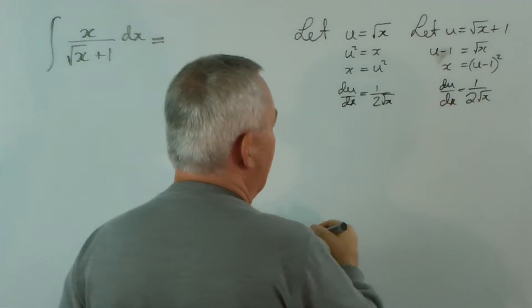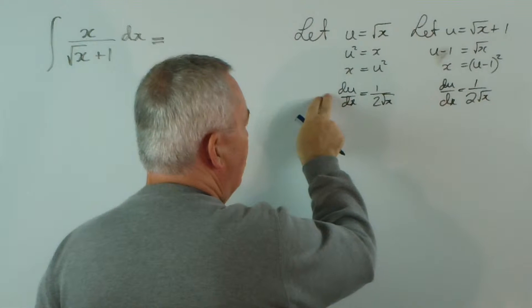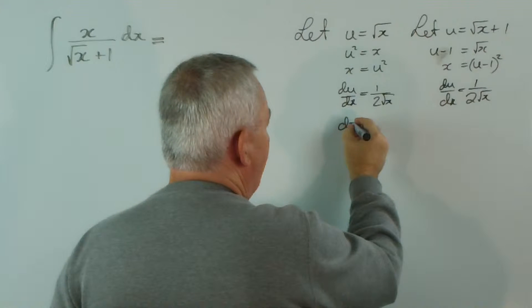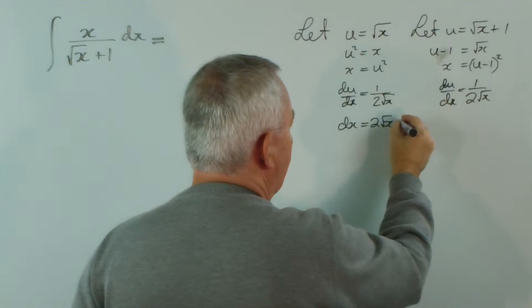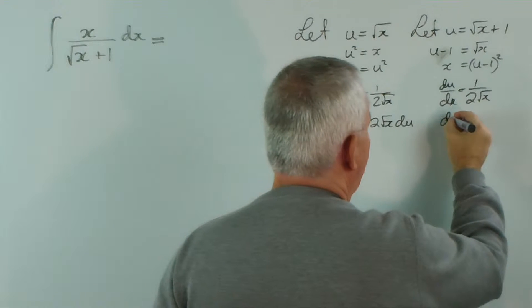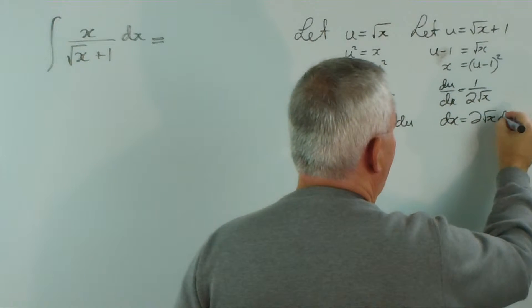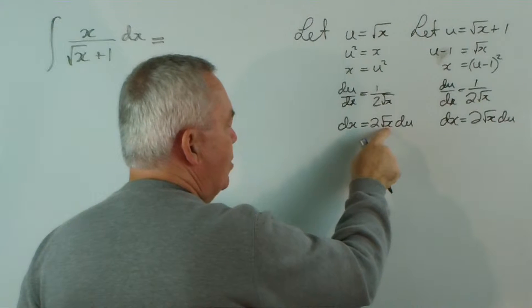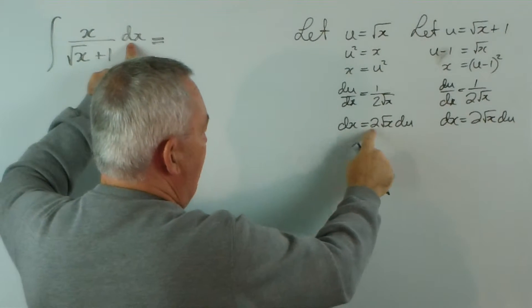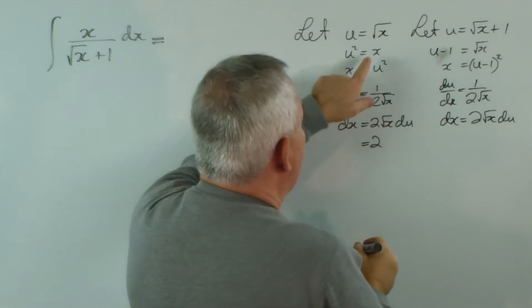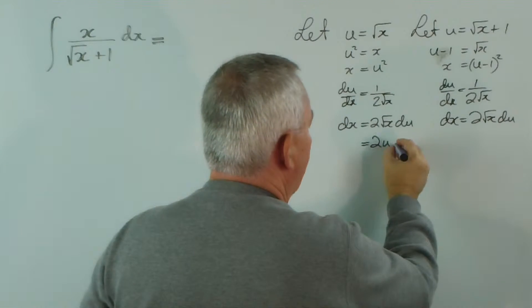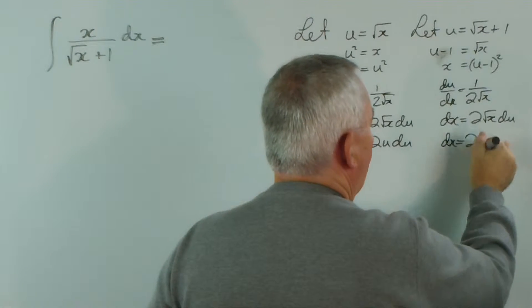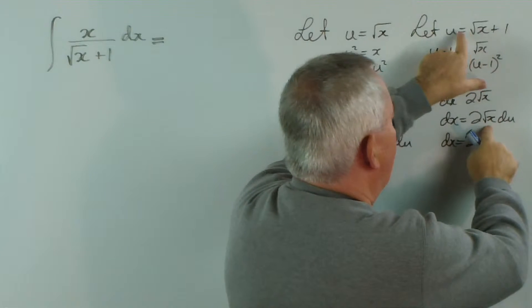But, notice what the implications are. If I rearrange this and bring the 2 root x up here and the dx up, I get dx is 2 root x du. Same would apply here. But, I want this in terms of u because I'm going to replace this dx with something. In this case, root x equals u. In this other case, the root x is u minus 1.